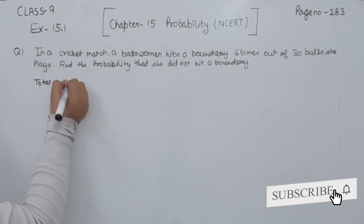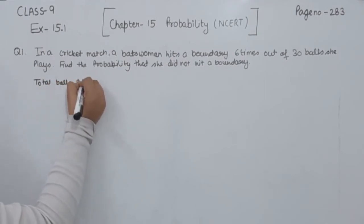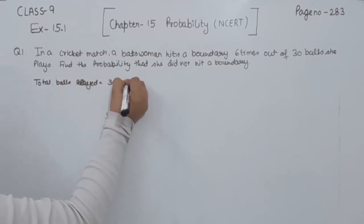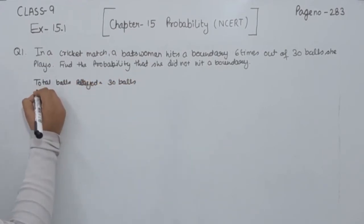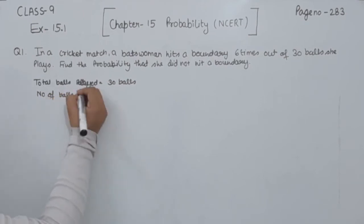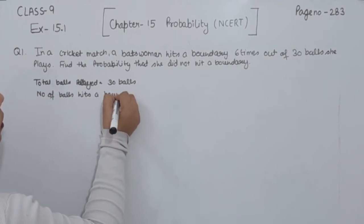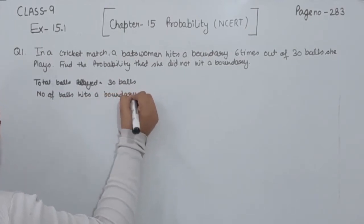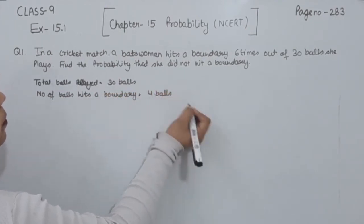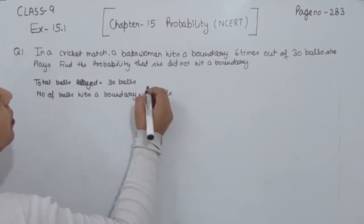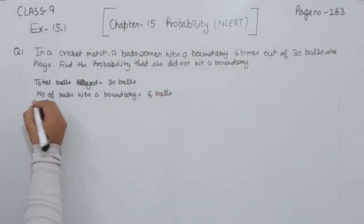First of all, we will write the total balls played. So, this is 30 balls and number of balls hits a boundary. We are having 6 balls, 6 times.